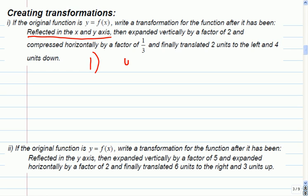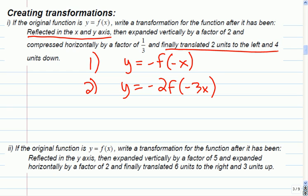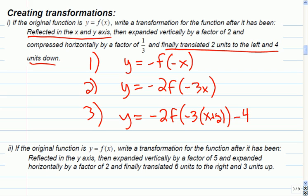Why not go like this instead? Reflected in the x and y, that means it's going to be y equals negative f of negative x. Then we can take a look, what's the next piece of the puzzle? Expanded vertically by a factor of 2, compressed horizontally by 1 third. So that means I could write this in. And the last piece of the puzzle says translated 2 to the left and 4 units down. So 2 to the left will be x plus 2, and 4 units down. So you should have a function that looks like this for your final answer. And again, there's nothing wrong with taking the extra steps.